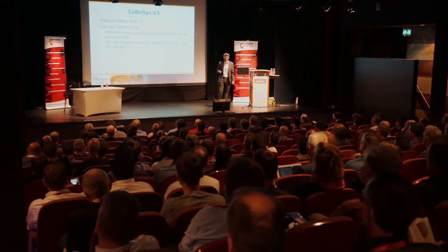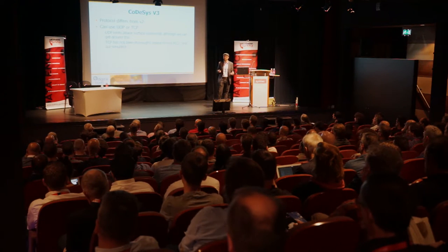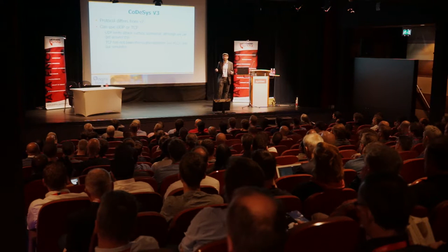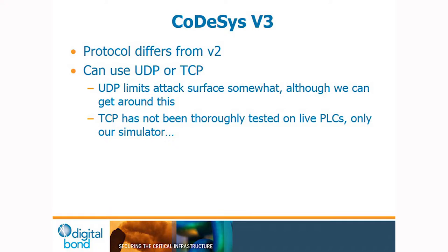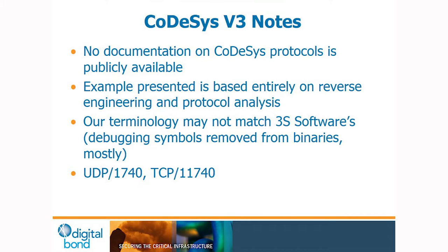For CODESYS version 3, the protocol is very different from version 2. It can use UDP or TCP — the UDP protocol definitely limits the attack surface. I haven't played with the TCP version yet. My terms for the protocol description probably won't match what 3S Software uses because there's no public documentation — figuring out how the protocol worked was entirely reverse engineering.